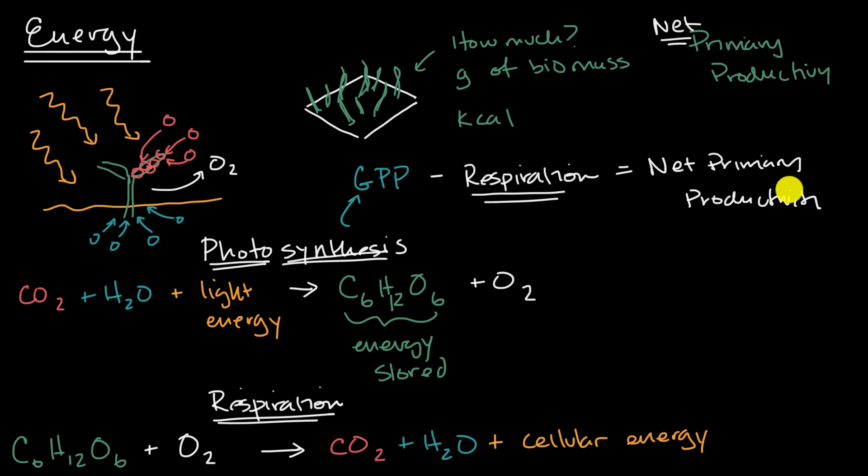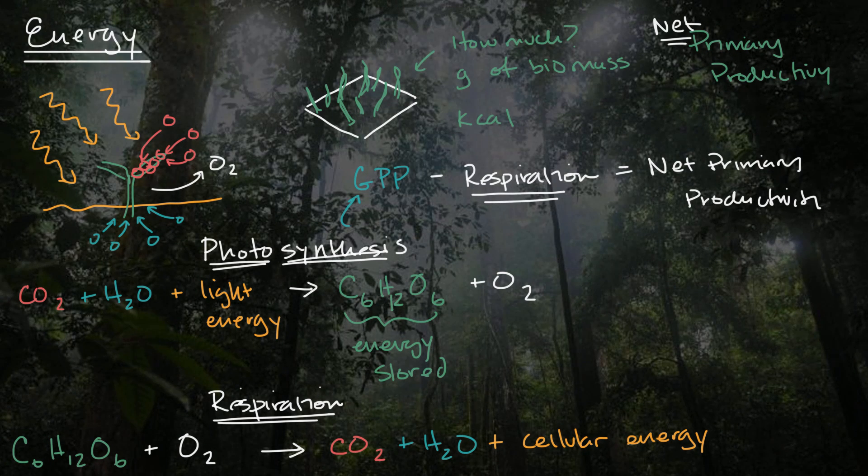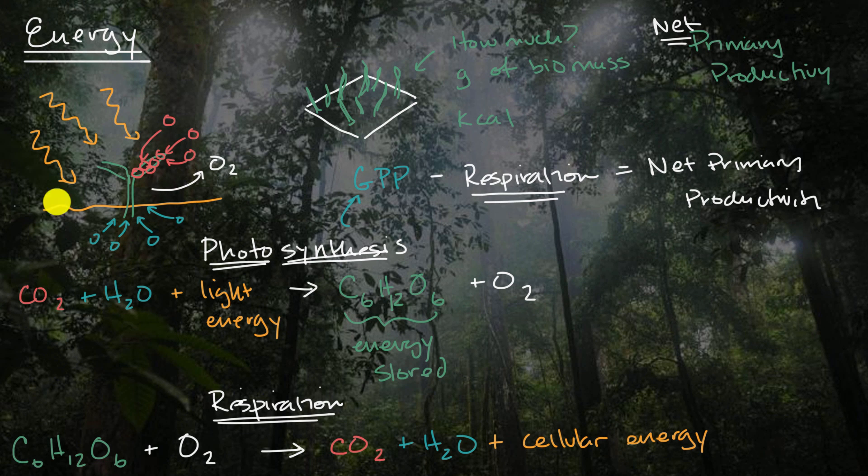And as I mentioned, just to make things a little bit tangible, if you took a very productive ecosystem, let's say something like a rainforest that I have here in the background, a very productive ecosystem like this, if you were to take on average a square meter of this, it produces in a year about 2,000 grams of biomass.